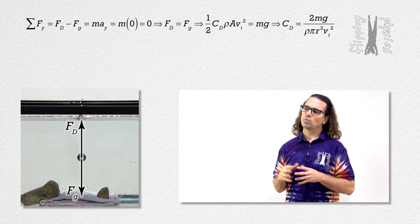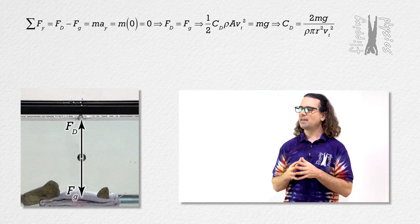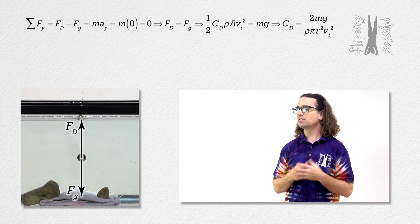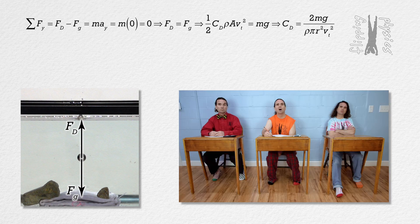What do we need in order to solve for the drag coefficient of the steel sphere? We need the mass, density, radius, and terminal speed of the steel sphere.